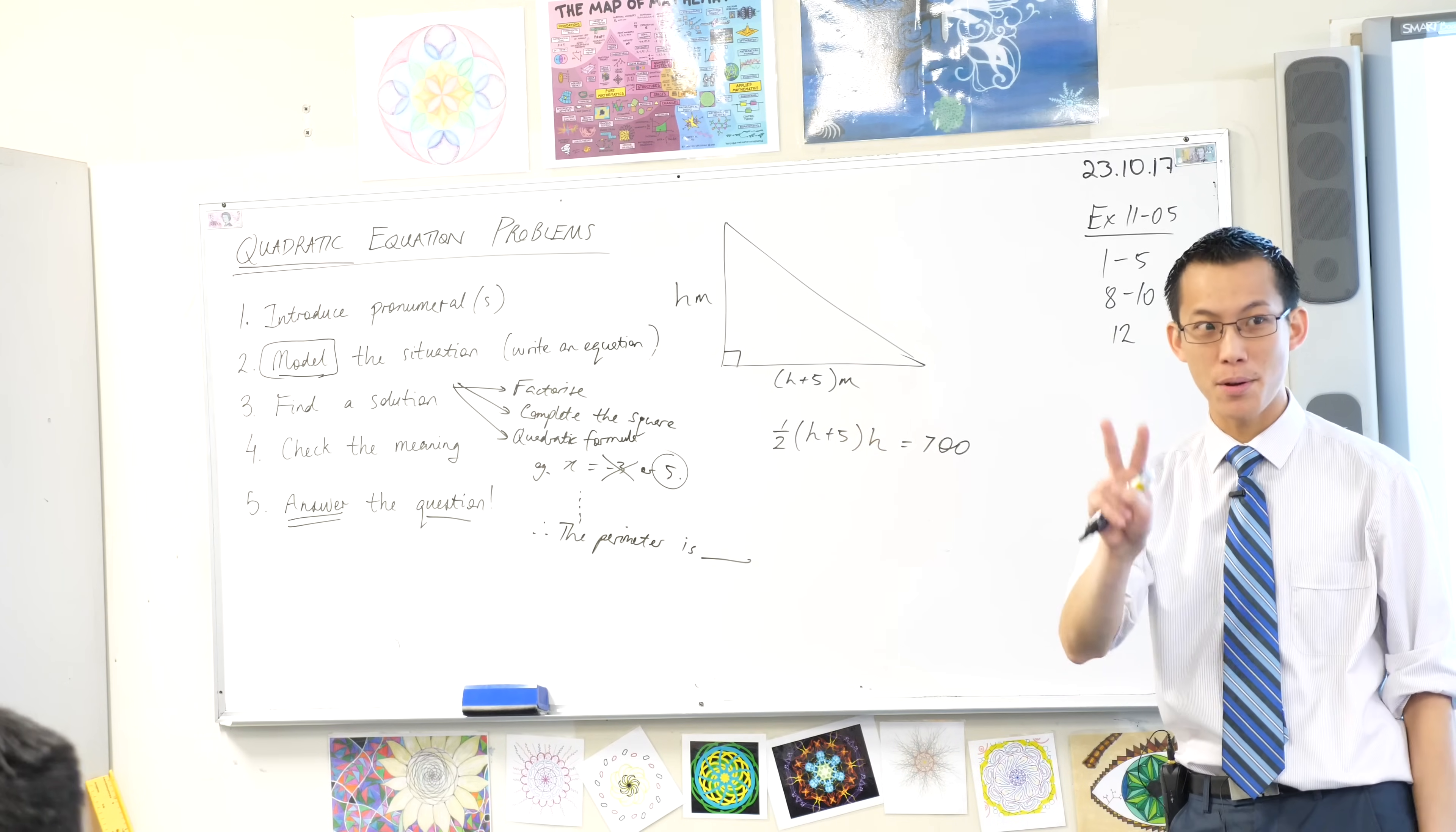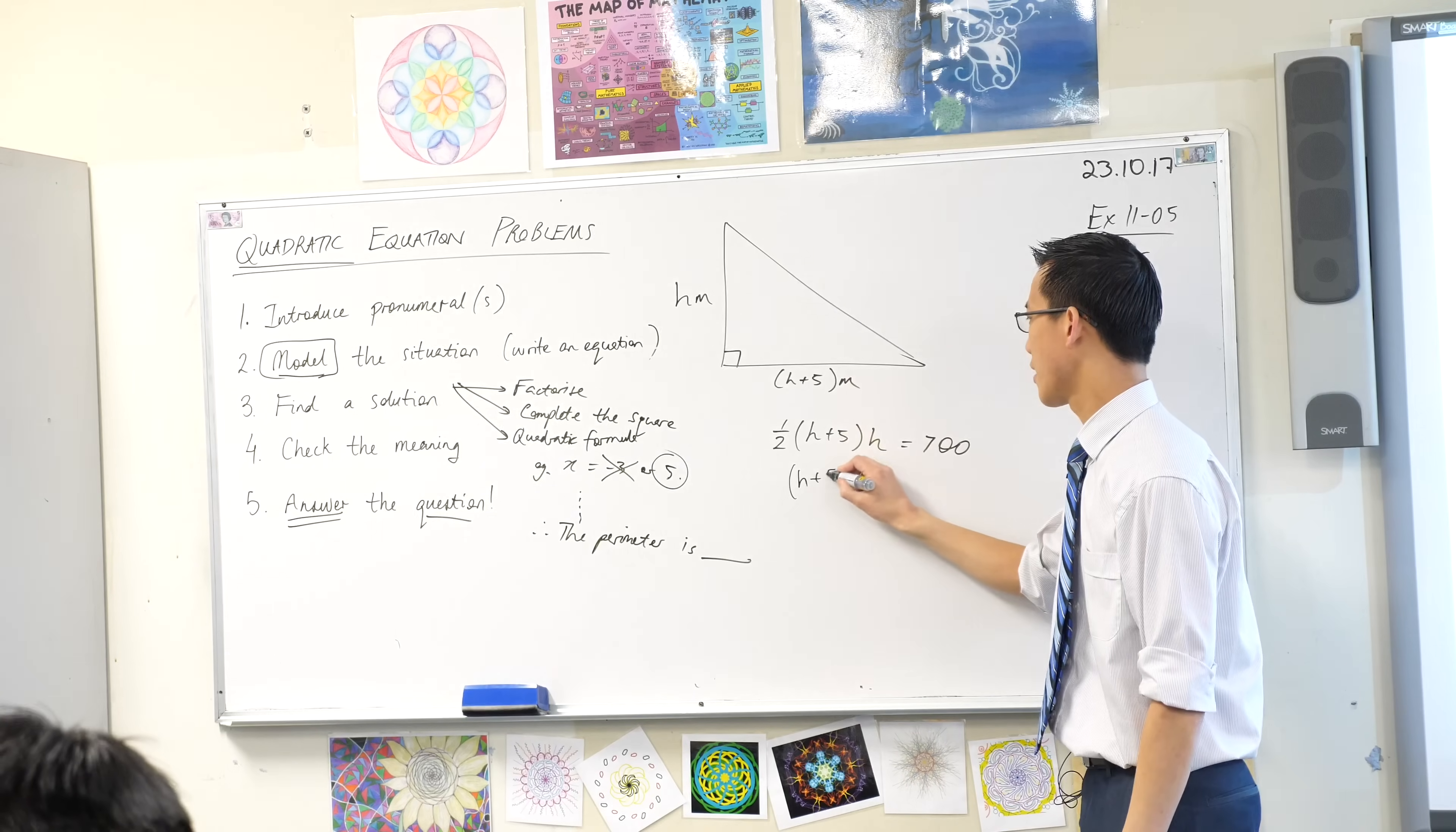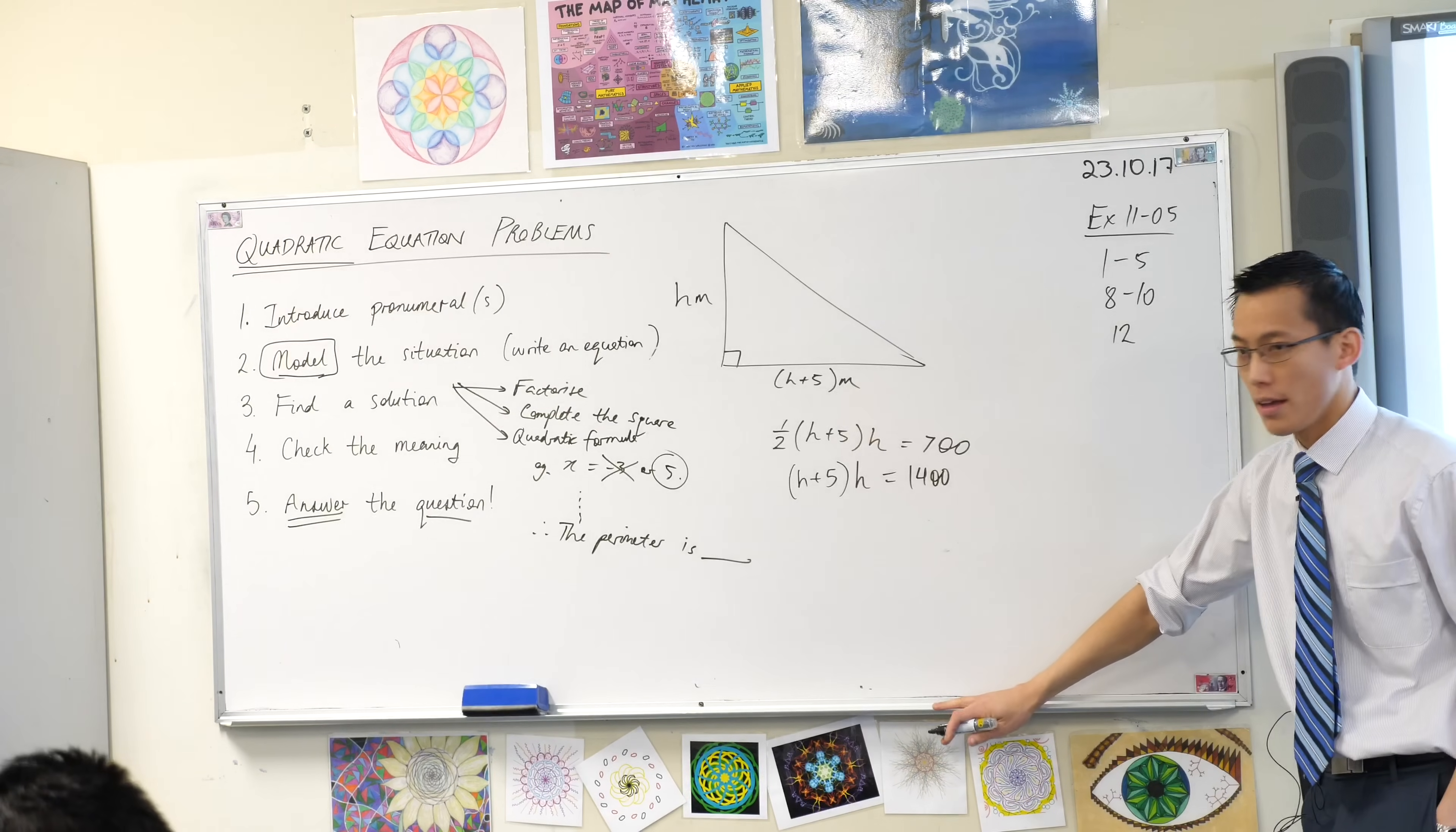If I multiply both sides by two, if I divide it by a half, which is multiplied by two, I'll get this. That looks like 1400. Is that okay? Yeah.